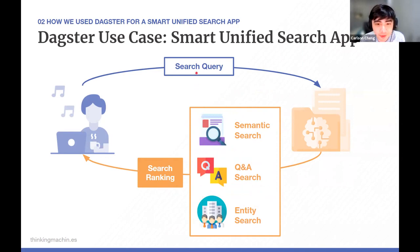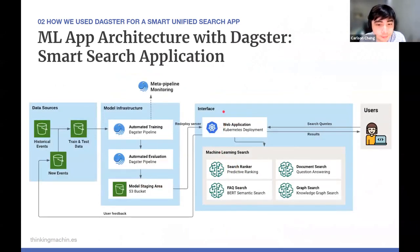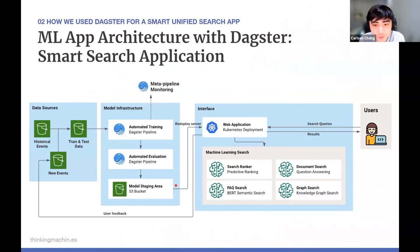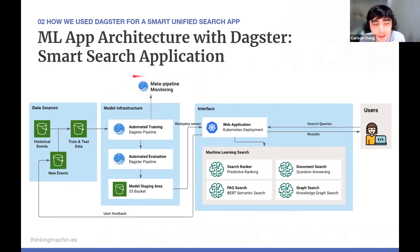The ranker is based on the search query itself, the user, and the confidence scores for each of the three different search results. In our architecture, training and test sets are piped into automated training and evaluation pipelines built using Dagster. This allows continuous training on newer data, building new models staged inside an S3 bucket, from which we can redeploy our web application servers. User interactions provide feedback to fine-tune models further for their application needs.